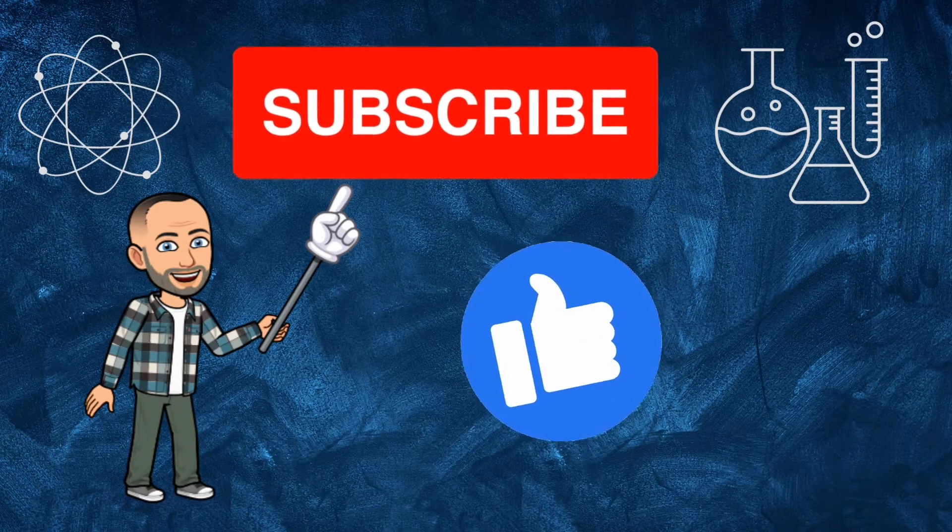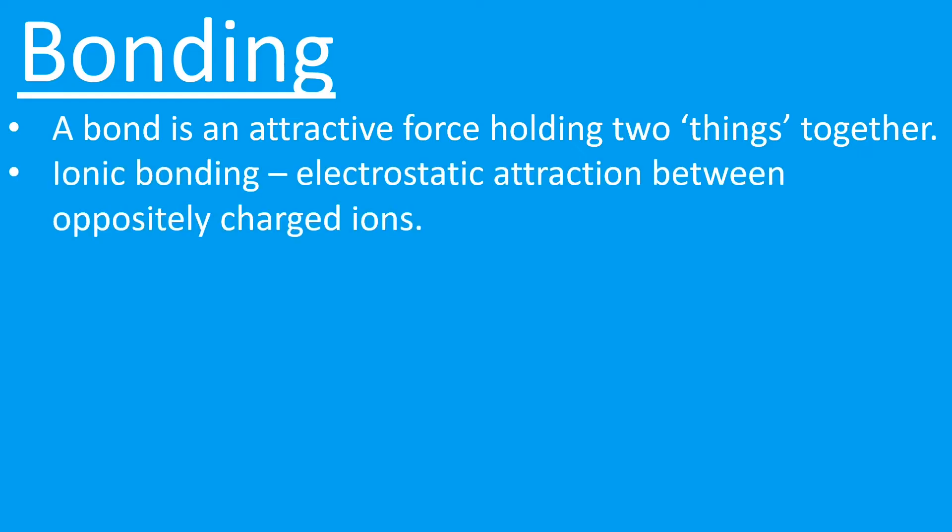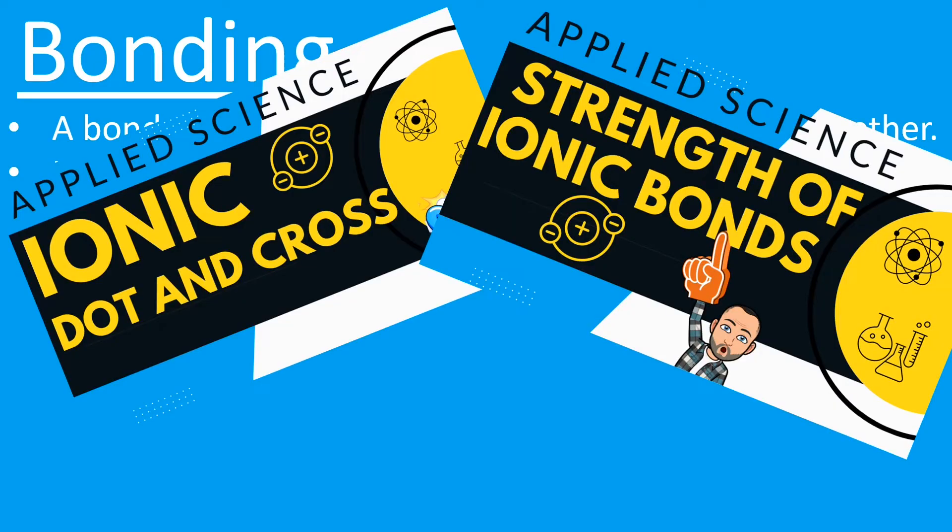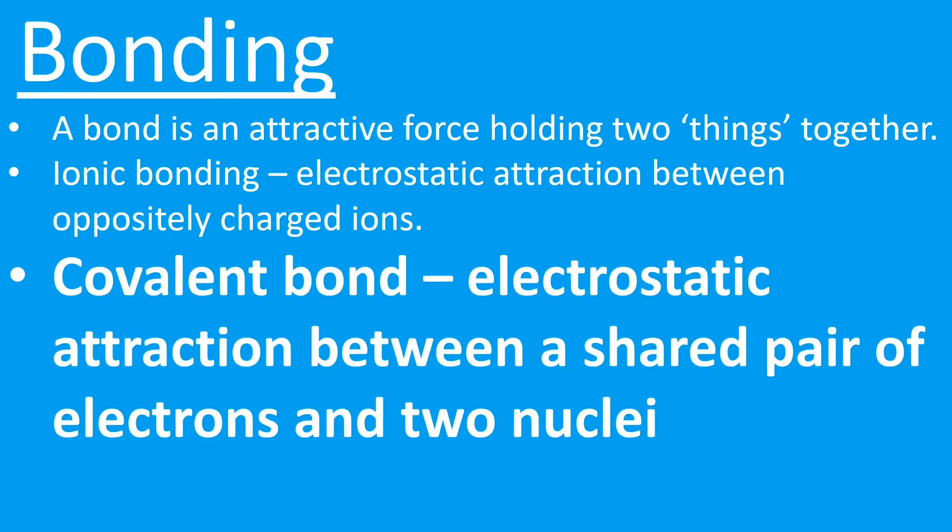So what is bonding? Let's think about this word bonding—it's used a lot in chemistry. A bond is just an attractive force that holds two things together. I've already covered ionic bonding, which was the electrostatic attraction between oppositely charged ions. If you haven't seen those videos, I suggest you check them out. But this is going to look at covalent bonding, and the definition for a covalent bond is there in bold: it's the electrostatic attraction between a shared pair of electrons and two nuclei.